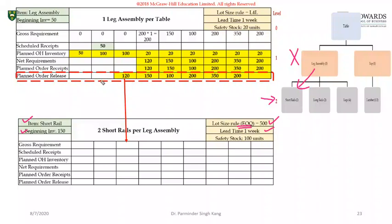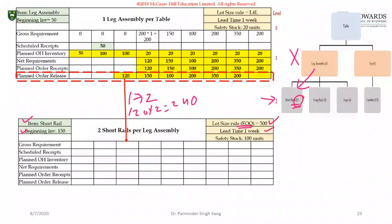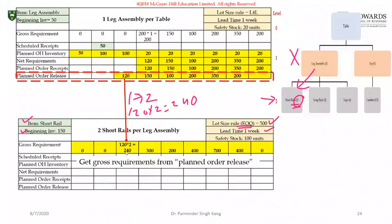There's no gross requirement in week zero or week one because we don't have any planned order release for the leg assembly. Similarly, no planned order release in week two. However, in week three we have 120 as planned order release. One leg assembly needs two short rails, so 120 will need 240 short rails. Make sure you determine the right quantities by looking at how many units of a child are required to make one parent. So filling the gross requirements: week four needs 300 short rails, week five needs 100, and another period needs 200 short rails.